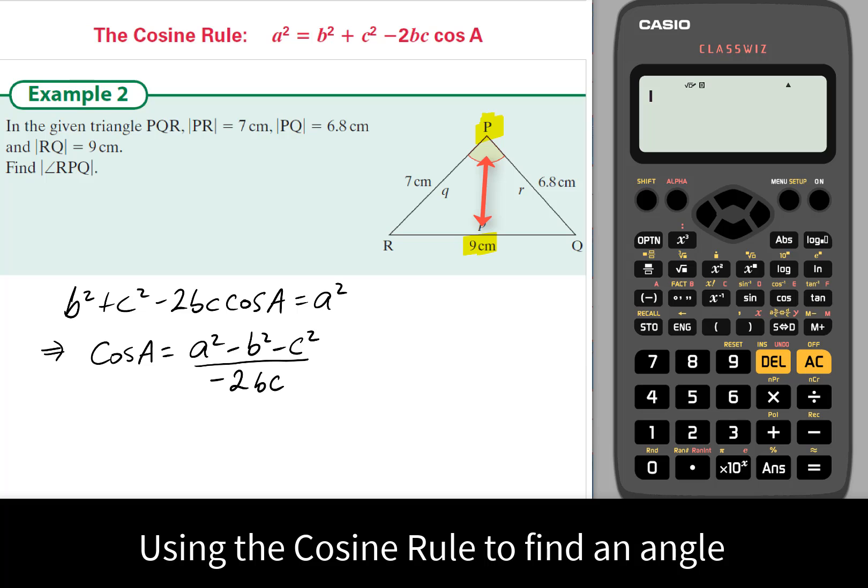We're almost there now. Angle a then is the cos inverse of this. Okay, so we have our formula ready now. I carefully identify that a is my angle P, and side a is side 9.